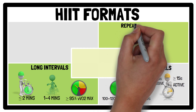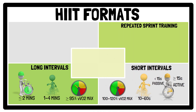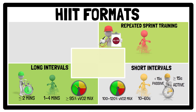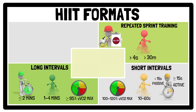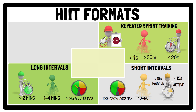Repeated sprint training involves performing a series of all-out sprints — for example above 4 seconds or covering distances above 30m — followed by a short rest period of less than 20 seconds between sprint efforts.